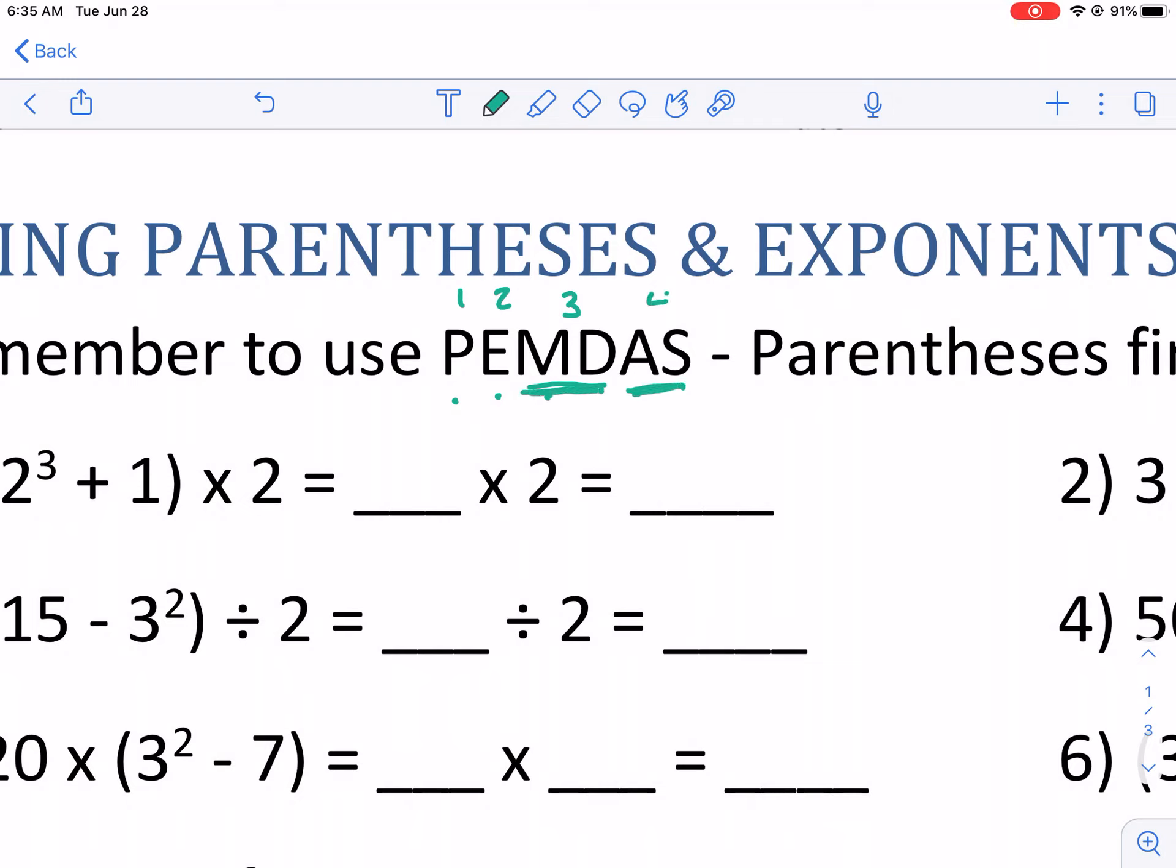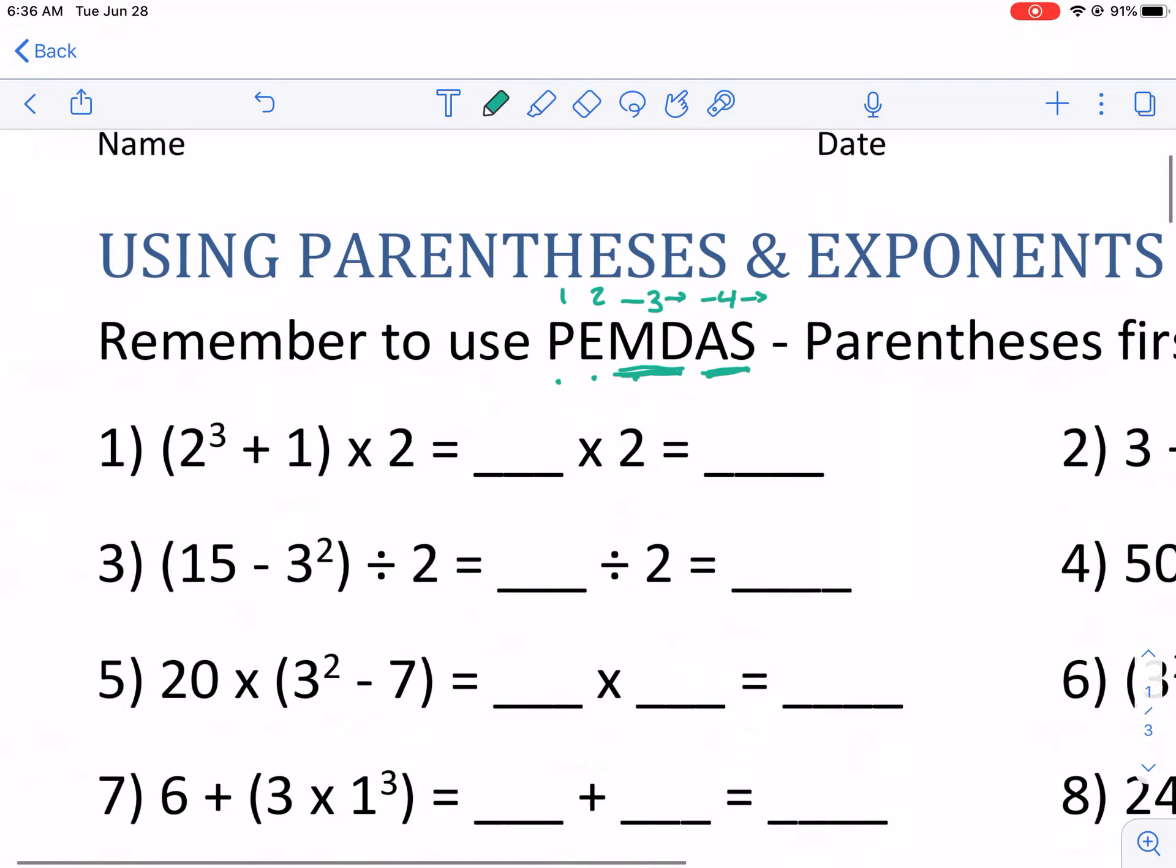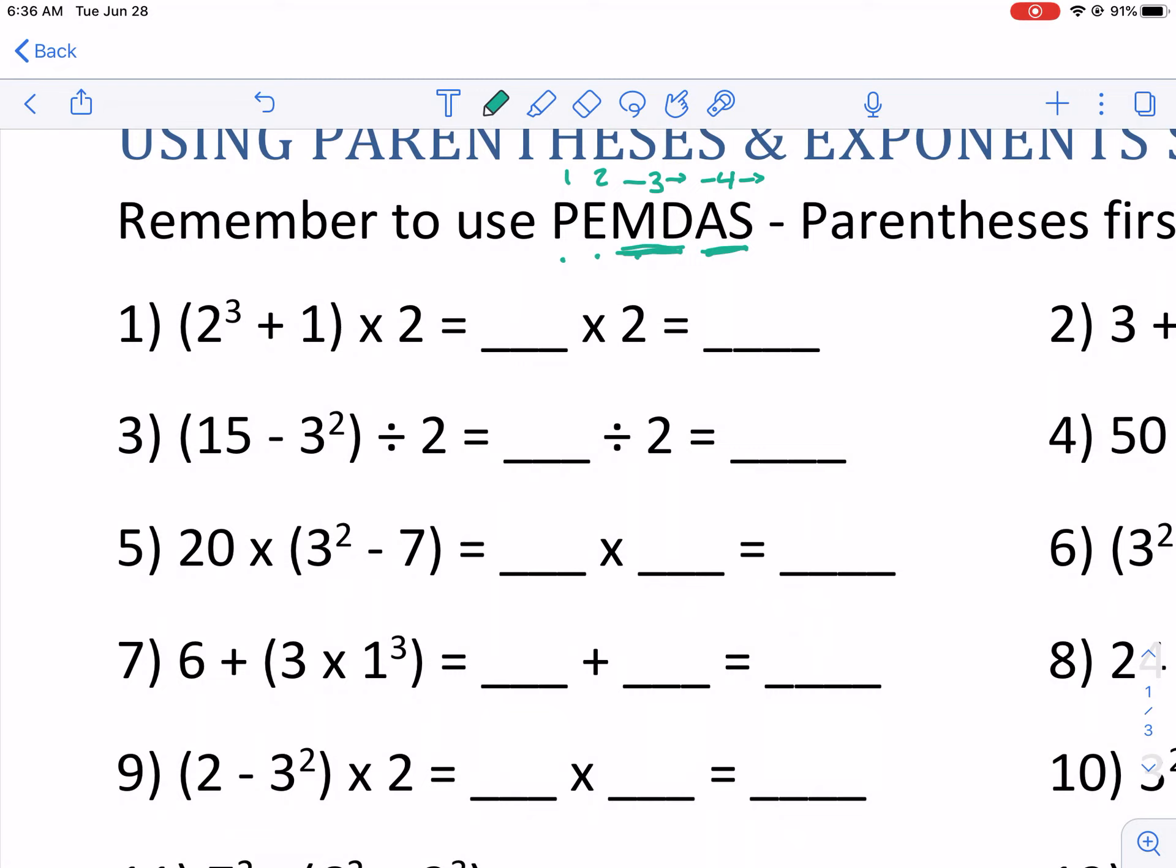So don't think multiplication comes before division. That's not how it works. It's whatever comes first left to right for both addition, subtraction, and multiplication, division. With that being said, let's go ahead and start looking at number one.